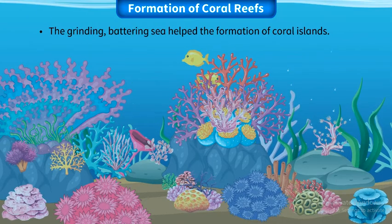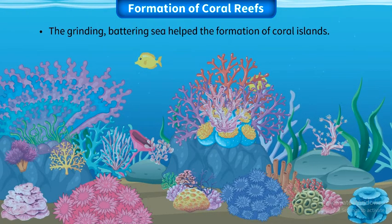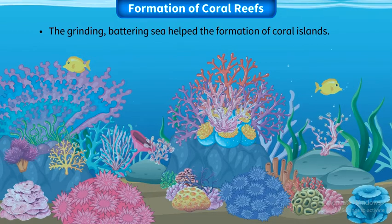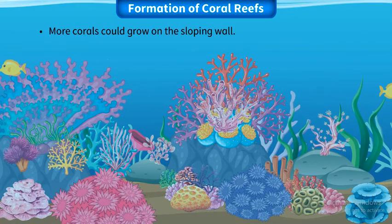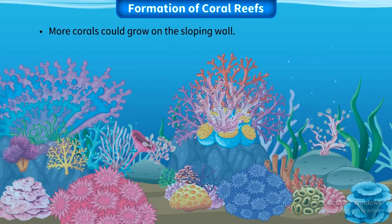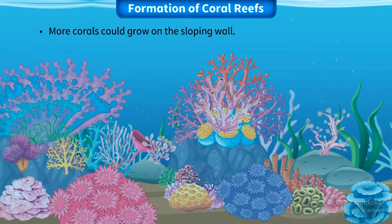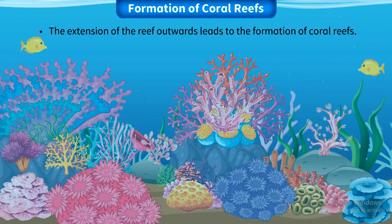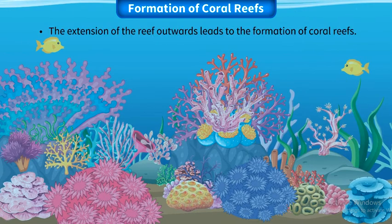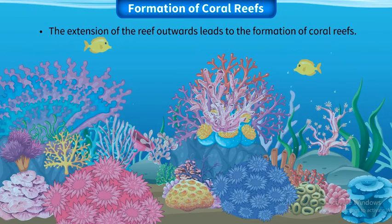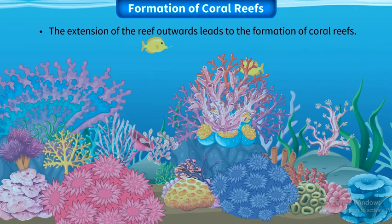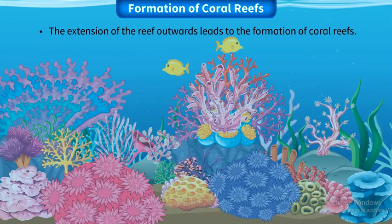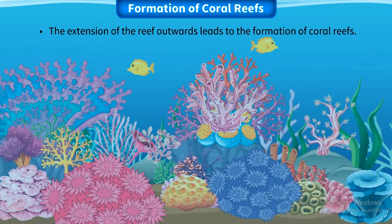Thus, the grinding, battering sea helped in the formation of coral islands. Strong currents broke up the fragments of corals and piled them up, forming a sloping wall below the reef front. This led to the growth of more coral on the sloping wall because it acted as a base for their growth. This resulted in the extension of the reef outwards, leading to the formation of coral reefs.